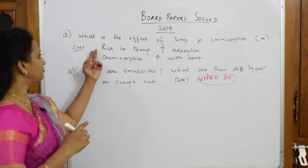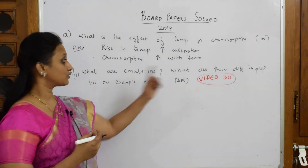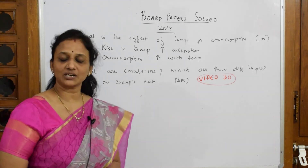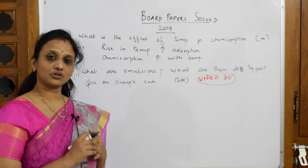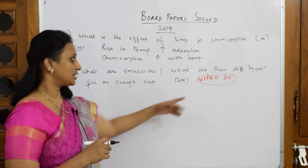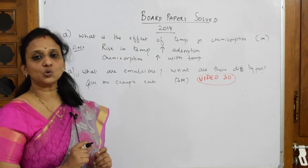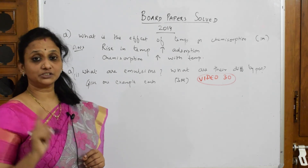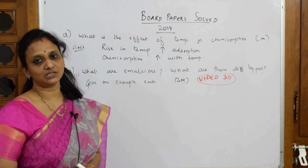It's half a mark for each point, so let's move to the next question: what are emulsions and what are the different types of emulsions? Give one example each. I've covered emulsions in detail — oil-in-water type, water-in-oil type, emulsifying agents, and demulsification — all in Video Number 30. Please watch that video for the complete answer, since this is a three-mark question requiring a full response.